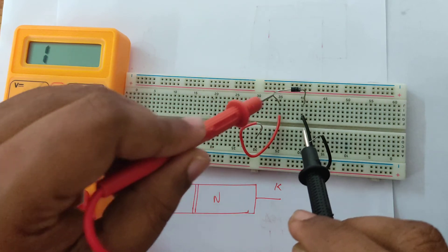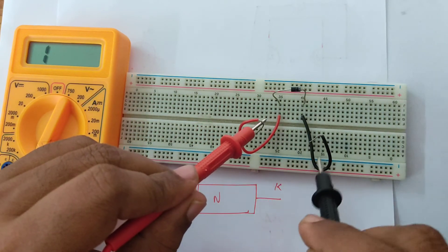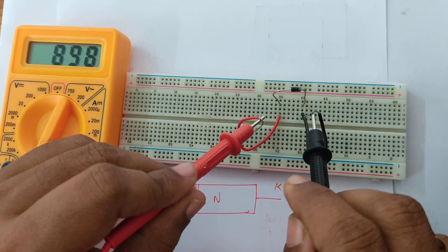So this is the anode terminal, I have connected this red wire here, I am going to touch it here and touch the black probe here. You can see the multimeter reading.